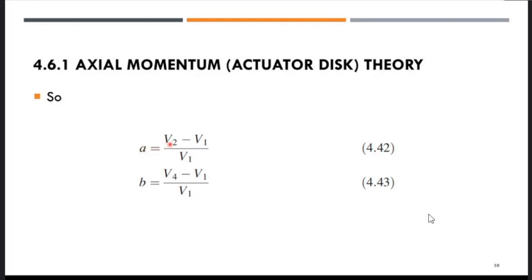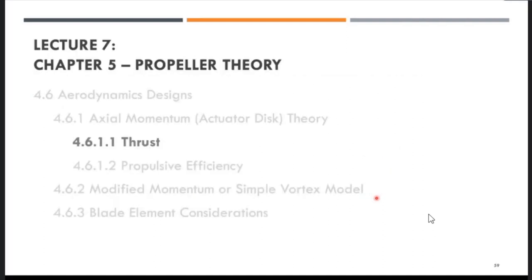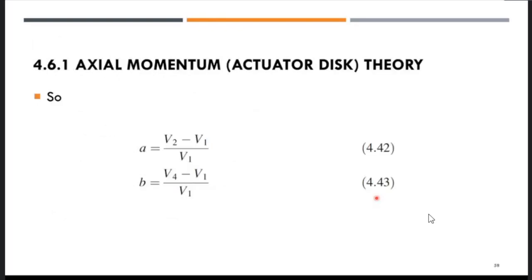Rearranging, the axial inflow factor a = (v2 − v1)/v1, and the slipstream factor b = (v4 − v1)/v1. These are equations 4.42 and 4.43, which we will use in Thursday's examples.